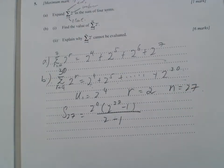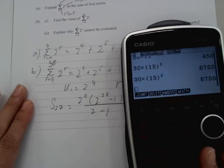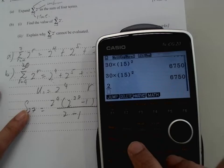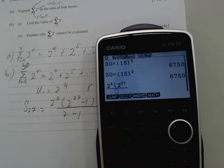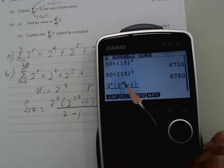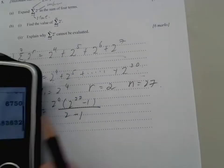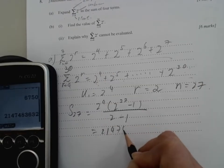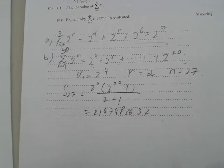And then we got our lovely calculator. Key in the value, 2 to the power of 4 times 2 to the power of 27 minus 1, because this is the ratio. And this is the number of terms, divided by 2 minus 1. And this is the very long answer. We got to copy that in. I think this will accept a rounded value, but this is exact. I will leave it as it is.